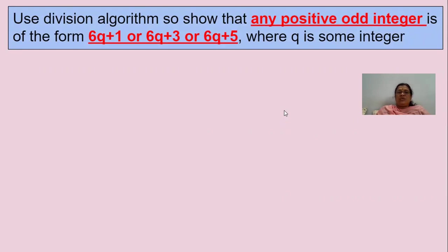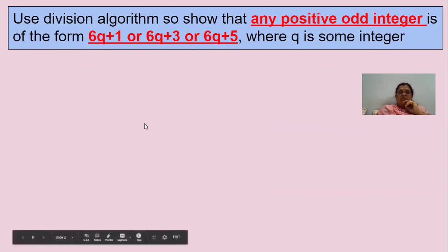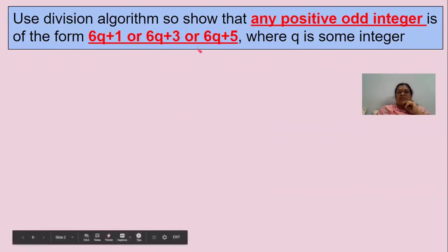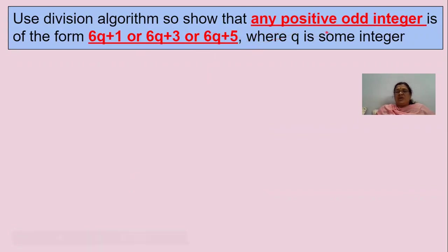Let us take a problem: by using the Division Lemma, show that any positive odd integer is in the form of 6q + 1, 6q + 3, and 6q + 5. You have to observe that you need to take odd positive integers only.